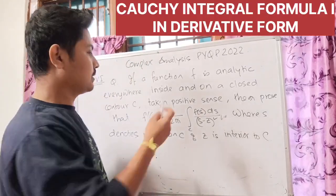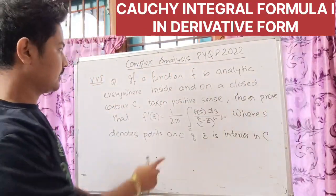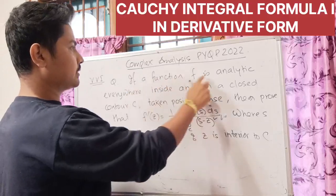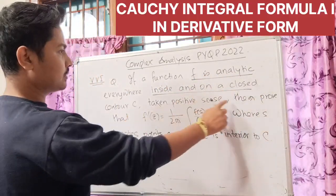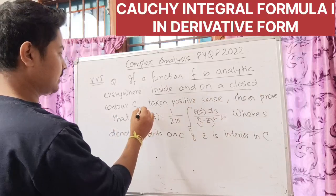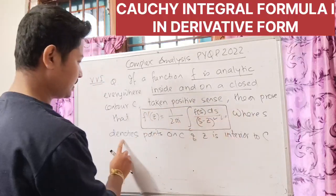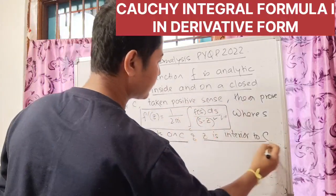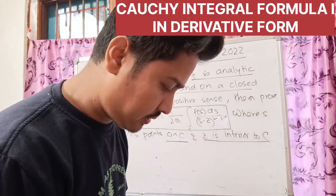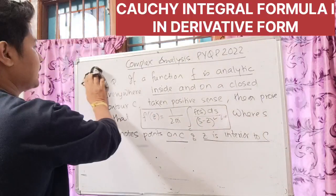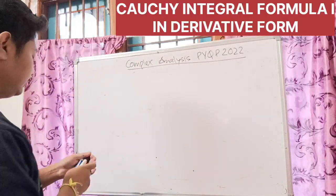Hello everyone, welcome once again to my YouTube channel DatapassAssam. Today I am solving a complex analysis previous year question from 2022 about the derivative theorem. The question is: if function f is analytic everywhere inside and on closed contour C taken in positive sense, then prove that f'(z) equals 1 divided by 2πi times the integration over closed contour C of f(s)ds divided by (s minus z) squared, where s denotes points on C and z is an interior point of C.